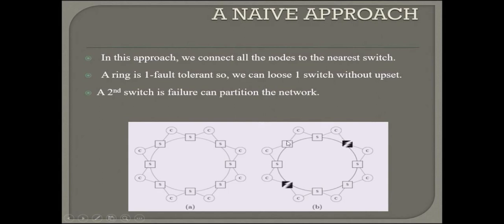But a second switch failure can partition our network. This is the partition of the whole network. So what to do? We have diameter constructions.